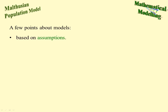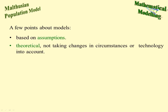We base life on assumptions. For example, when you drive off at the traffic light when the light turns green, you make the assumption that no car is going to come flying through the other way. Models are theoretical — they don't take changes in circumstance or technology into account.